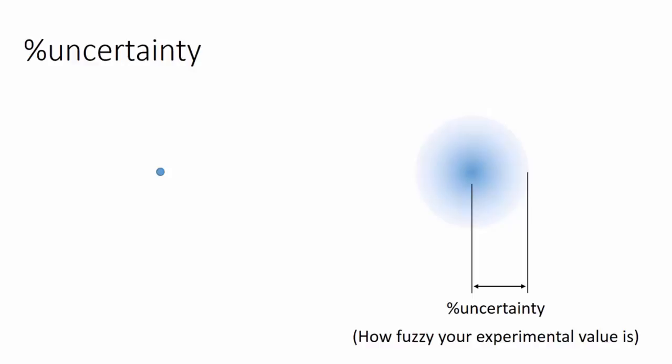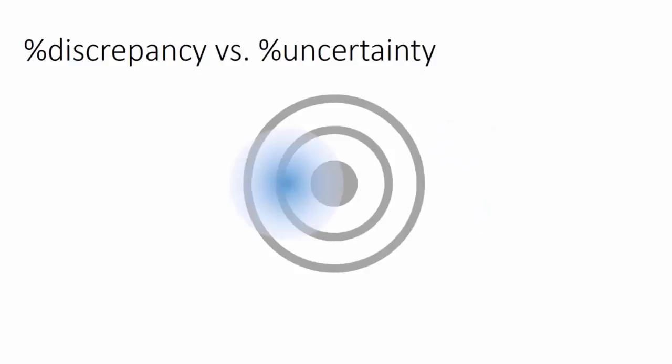Well how does this combine with our percentage discrepancy? Well let's put that on to our target. So instead of a fine pinpoint, we have that fuzzy scatter shot of a fairly large percentage uncertainty. So you have your percentage discrepancy and your percentage uncertainty.